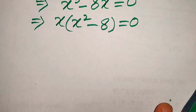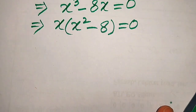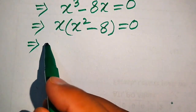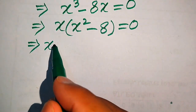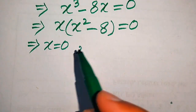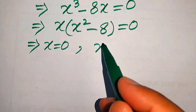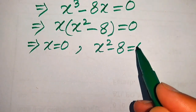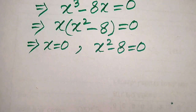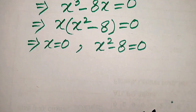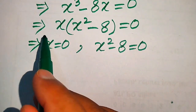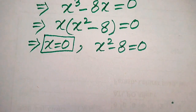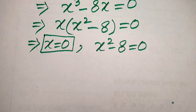We divide this equation into two cases. The first case: x equals 0. The second case: x squared minus 8 equals 0. So x equals 0 is our first root of the given equation.